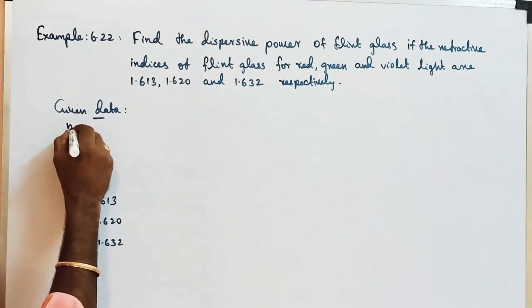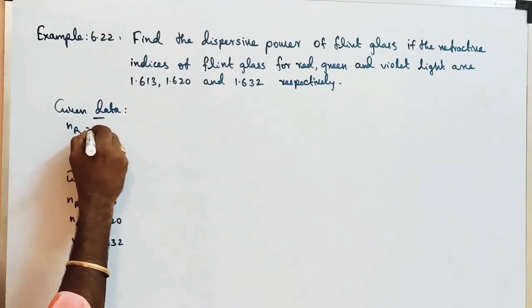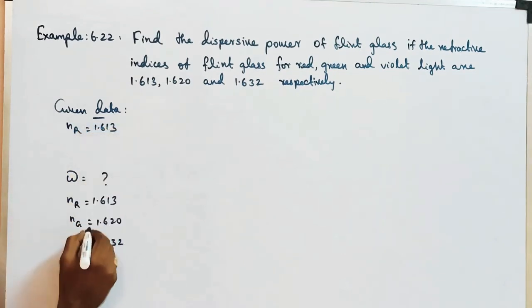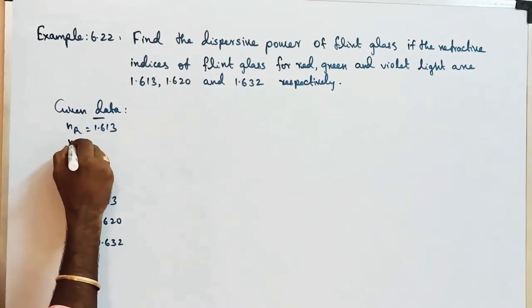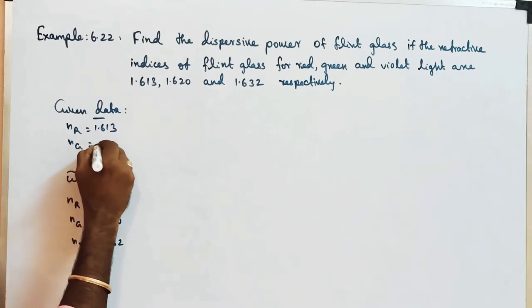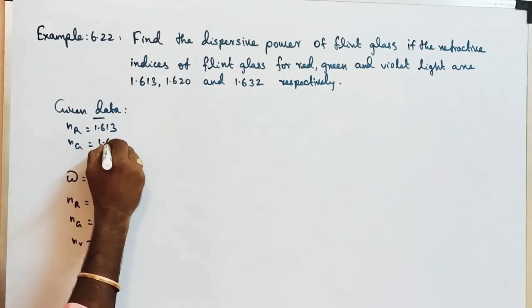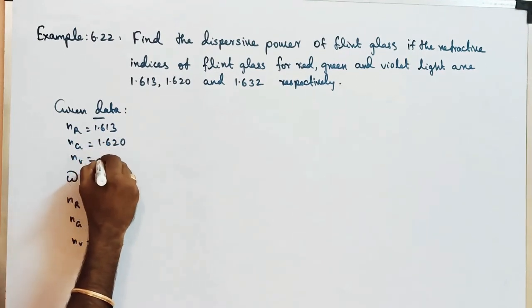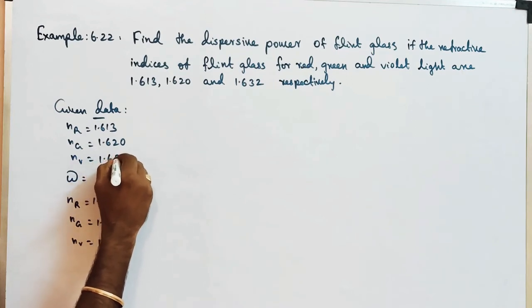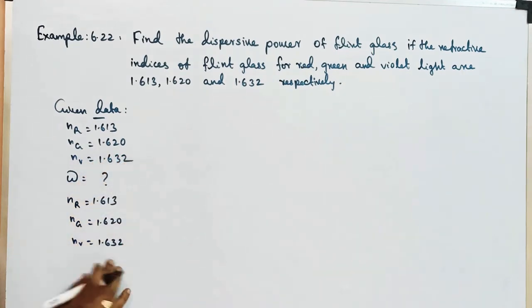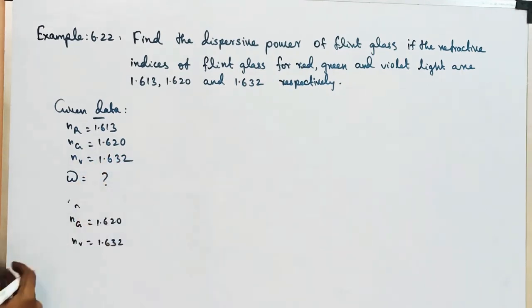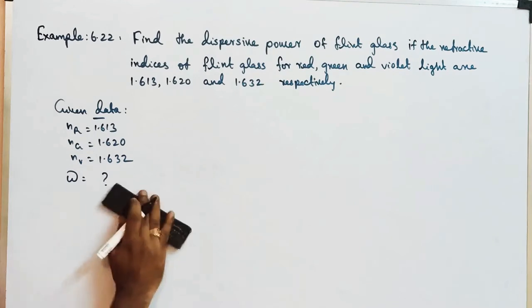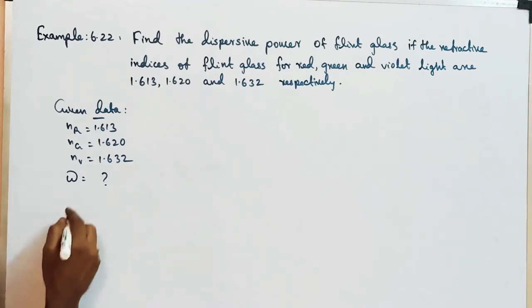So the given values are: NR is equal to 1.613, NG is equal to 1.620, then NV is equal to 1.632. This is the dispersive power problem.